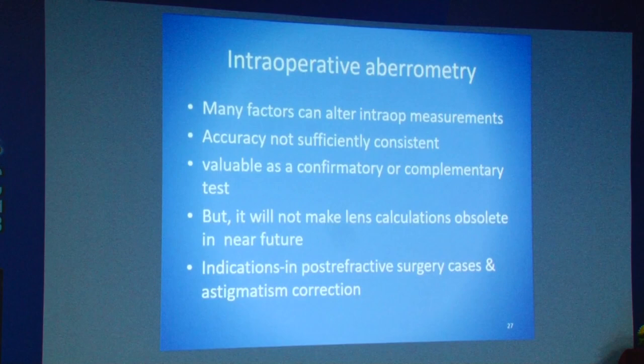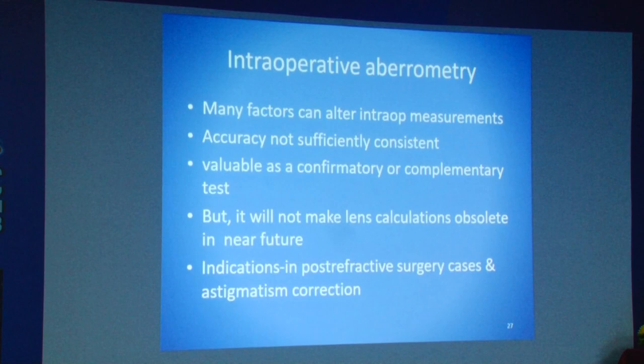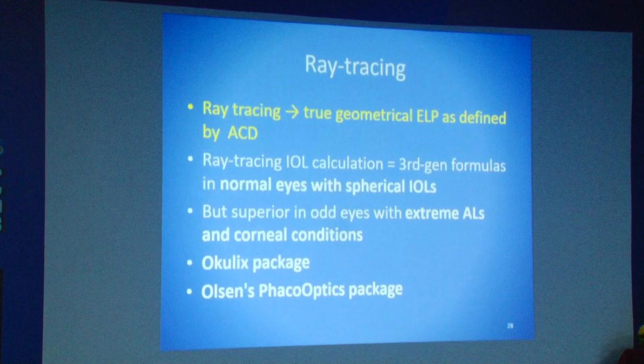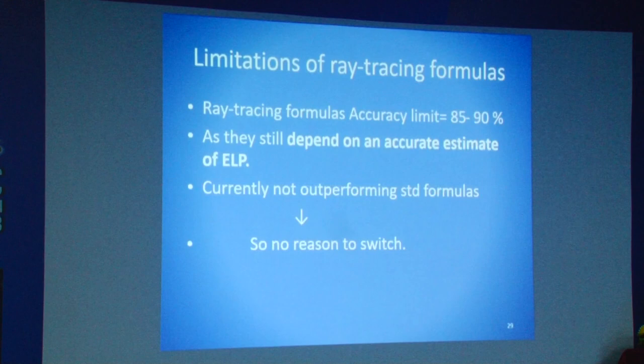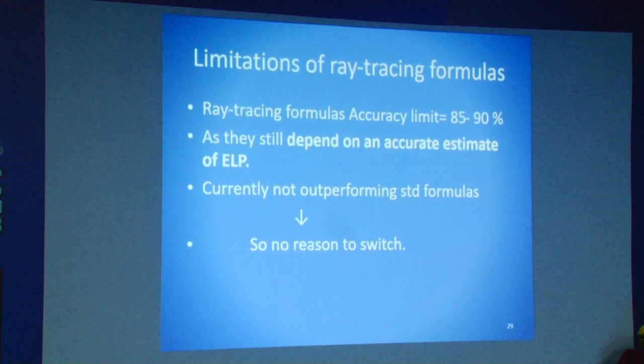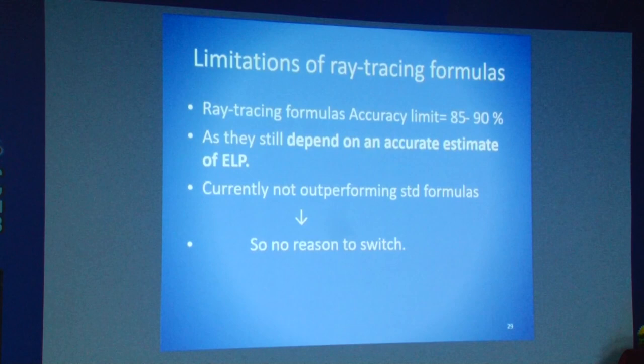Intraoperative aberrometry is not going to make lens calculations obsolete in the near future. At best, it is valuable as a confirmatory or complementary test, with indications in post-refractive surgery cases and astigmatic correction with toric IOLs. Ray tracing IOL calculation is equivalent to 3rd generation formulas in normal eyes with spherical IOLs, but is superior in eyes with extreme axial length and corneal conditions — incorporated in Oculix and ZEISS optics. However, ray tracing is still dependent on accurate estimation of effective lens position, so there is no reason to switch as it is not outperforming standard formulas.